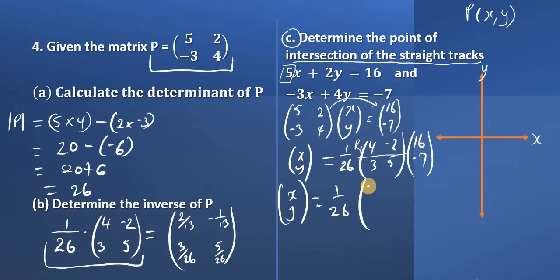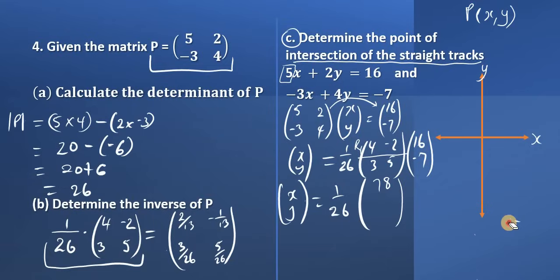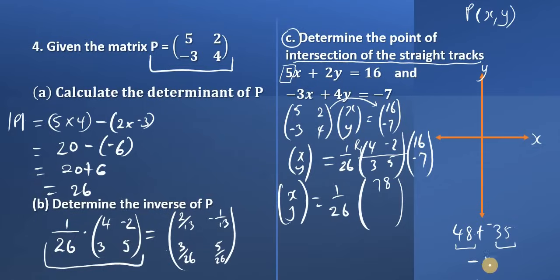Row 1 multiplies the column of the next matrix. So 4 times 16 gives us 64, added to negative 2 times negative 7, which gives us 14. That total is 78. Then row 2 multiplies the same column: 3 times 16 gives us 48, added to 5 times negative 7, which is negative 35. Adding these — recognizing different signs — we subtract to get 13, keeping the sign of 48 which is positive. So positive 13.